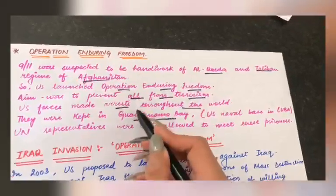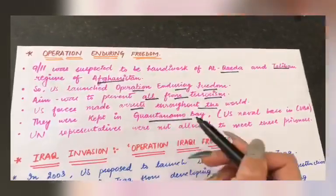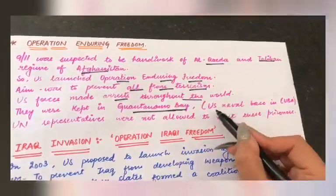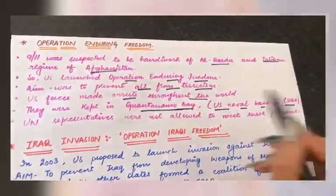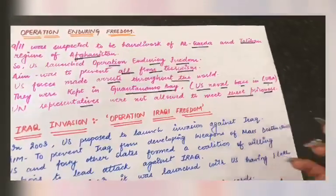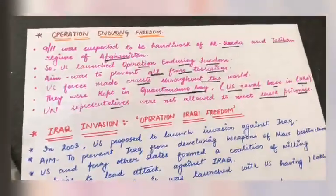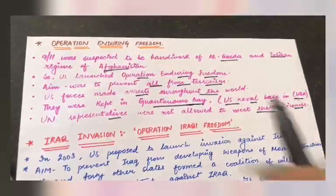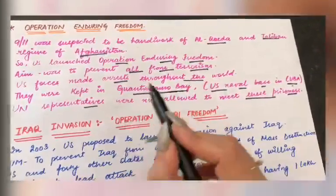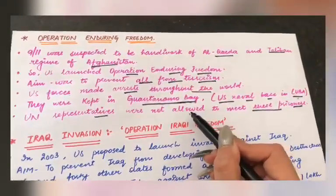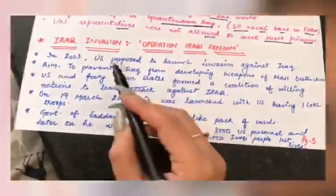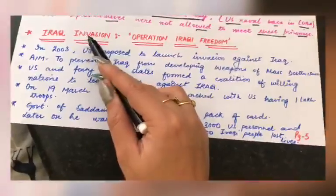Guantanamo Bay is a US Naval Base in Cuba. Representatives were not allowed to meet the prisoners; family members were not allowed to see them; and they were not given a trial. Even if there was just a doubt of guilt, no trial was conducted.